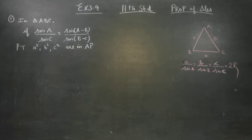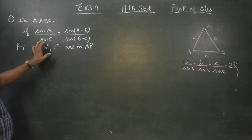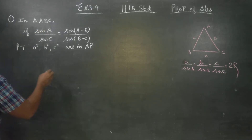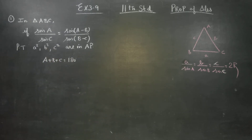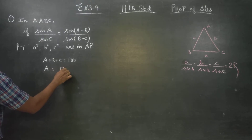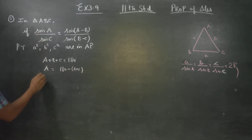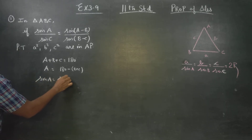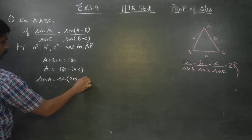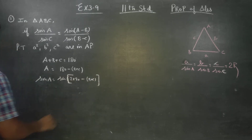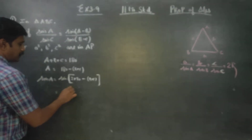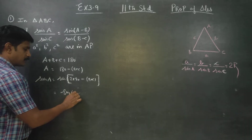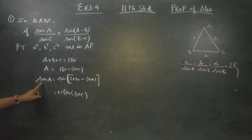Before entering into this sum, since we have sinA and sinC, we need to work with angles. In a triangle, A + B + C = 180°. So A = 180° − (B + C). Therefore, sinA = sin(2×90° − (B+C)). Since it is an even multiple and the second quadrant is positive, sinA = sin(B + C).